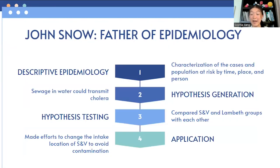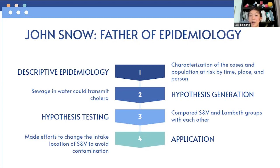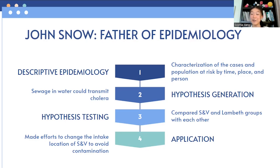Taking a look at the steps of epidemiology and how John Snow applied them: first, descriptive epidemiology — he characterized the case and population at risk by time, place, and person. Second, he generated his hypothesis that sewage in water could transmit cholera. Third, he tested that hypothesis by comparing the Southwark and Vauxhall and Lambeth groups using comparable numbers. And fourth, application — he made efforts to change the intake location of Southwark and Vauxhall to avoid contamination.